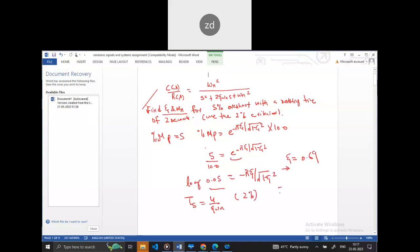So zeta value we know, Ts value is 2. So 2 equals 4 divided by ζωn. So we need to calculate omega n value. Omega n value would be 2 divided by 0.69, which would be the answer.